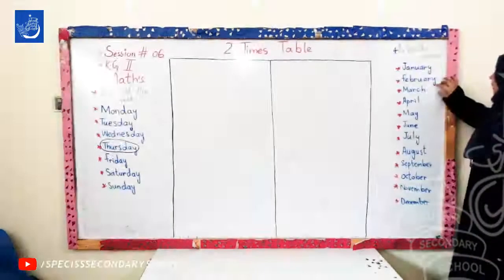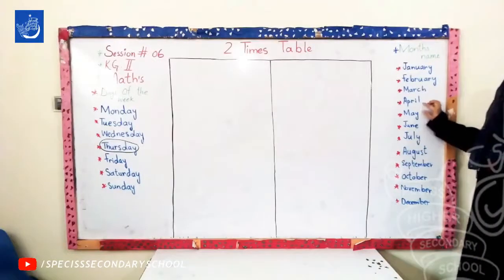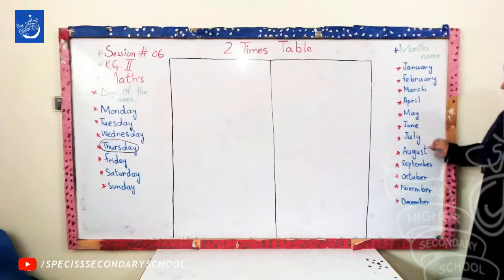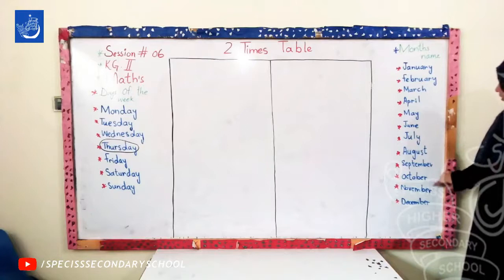January, February, March, April, May, June, July, August, September, October, November, December.